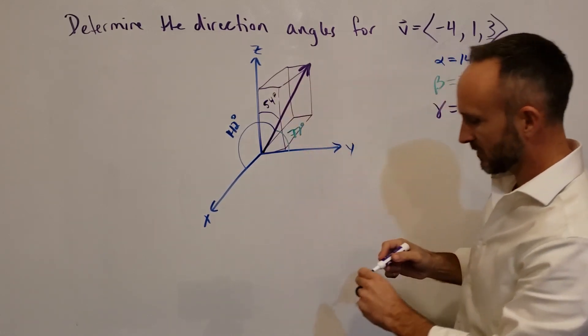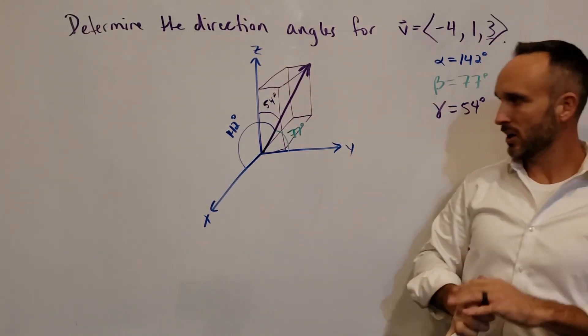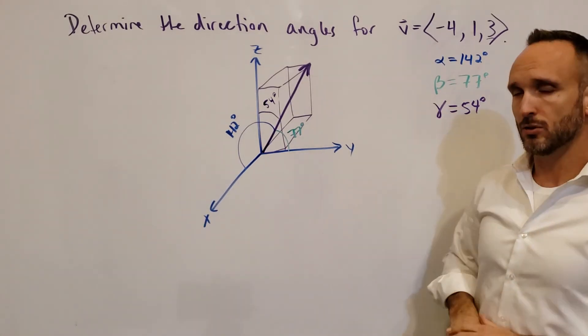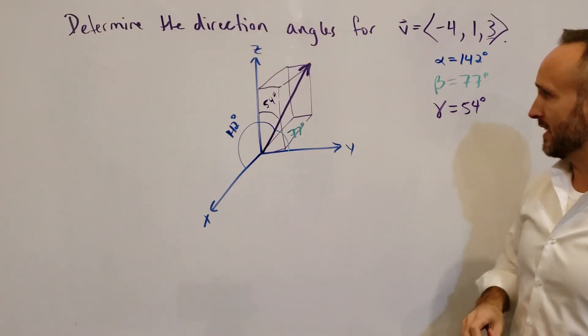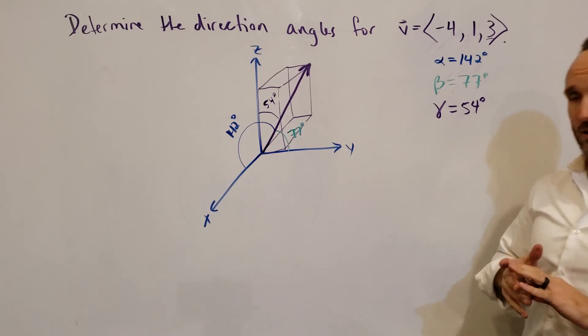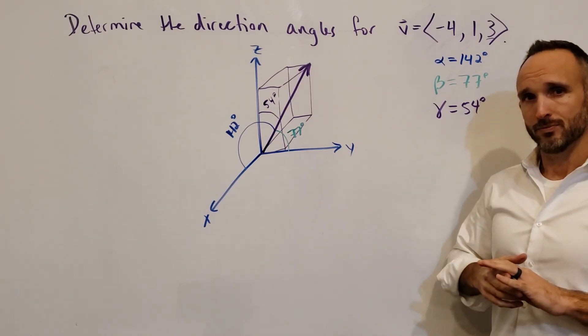Not a great drawing — computer software could do a much better job. But that's the rough idea of what direction angles are for three-dimensional vectors.